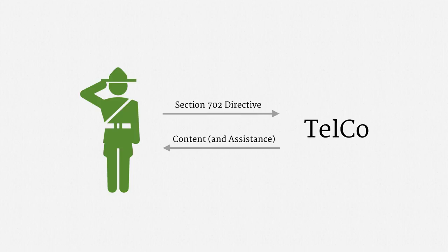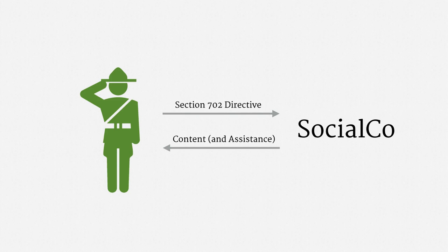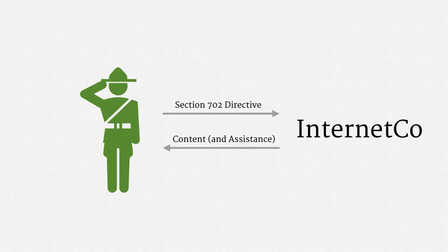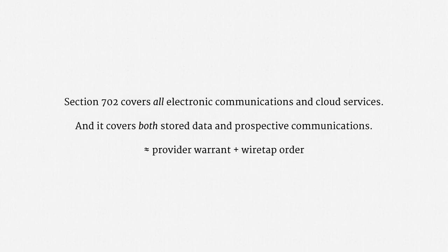The company has to produce stored or prospective content, and provide any ancillary assistance that's required. The company could be a telecom handing over voice calls or voicemail, or an email service handing over both saved and future messages, or a social network giving up messages and posts, or even an internet service provider handing over internet traffic. Section 702 covers all electronic communications and cloud services, and it covers both stored data and prospective communications. Roughly, a Section 702 directive is like a combined provider warrant and wiretap order.